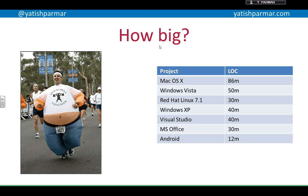If you look at that table on the right-hand side, you can see lines of code. This is an old table, but you can see Android had 12 million lines of code, Microsoft Office 30 million, and Mac OS X 86 million. Windows Vista had 50 million. Obviously there's not one person working on a problem, and there can be a really large amount of code in a codebase.